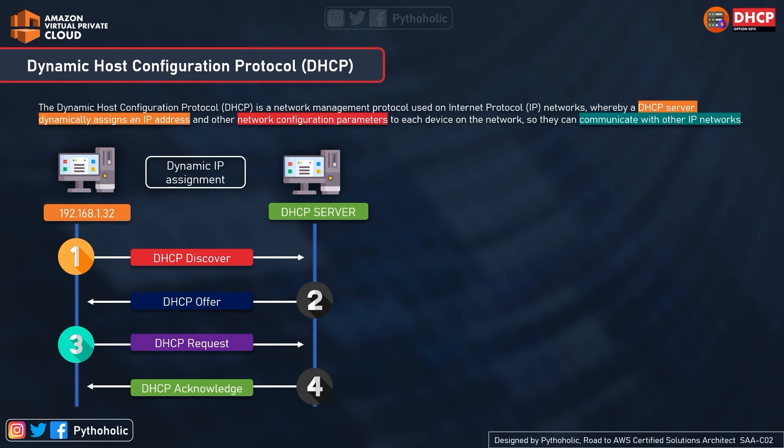Let's say the host is your DHCP client and we have the DHCP server. The first step is the DHCP Discover request, which is sent to the DHCP server. When a device or host is connected, it broadcasts a DHCP Discover message over the Ethernet network to locate all available DHCP servers.